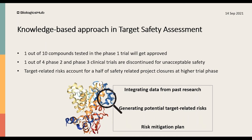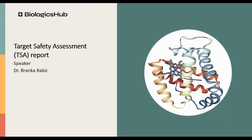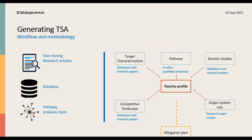Our approach in creating TSA reviews combines text mining with research articles, various databases, and pathway analysis tools. To generate the final toxicity profile of the target, all collated information is critically reviewed by an expert. In each chapter, we rely on peer-reviewed research articles and different database sources, and our toxicity profile in the end includes mitigation writing.